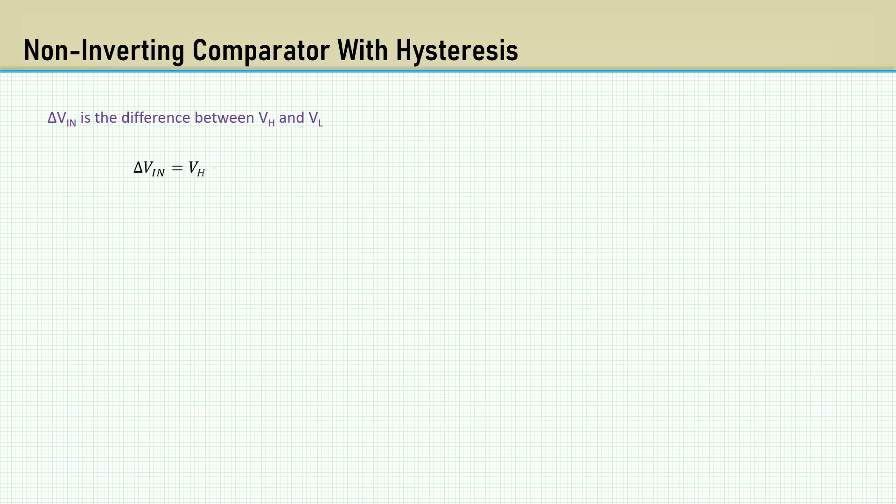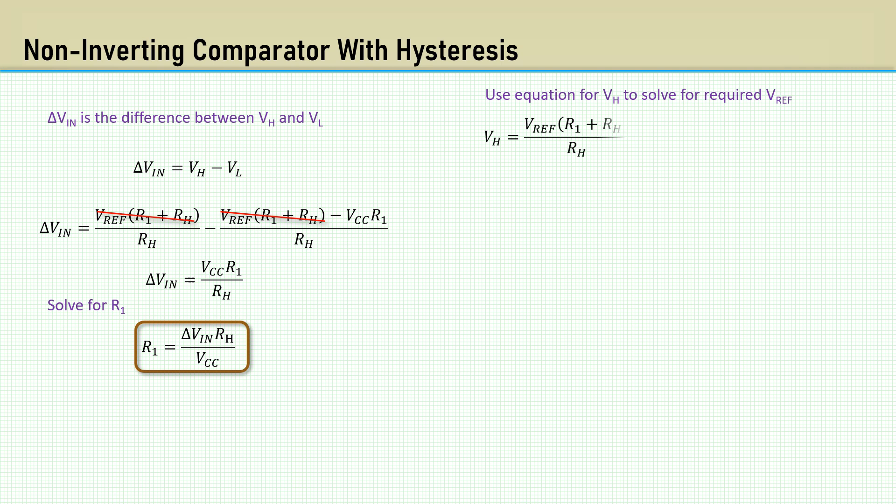Delta VN is VH minus VL. These terms cancel and we have VCC R1 over RH. Then rearrange to solve for R1. We will use the equation for VH to solve for Vref. Multiply by 1 over RH to eliminate the second occurrence of RH and we have Vref equals VH over R1 over RH plus 1.